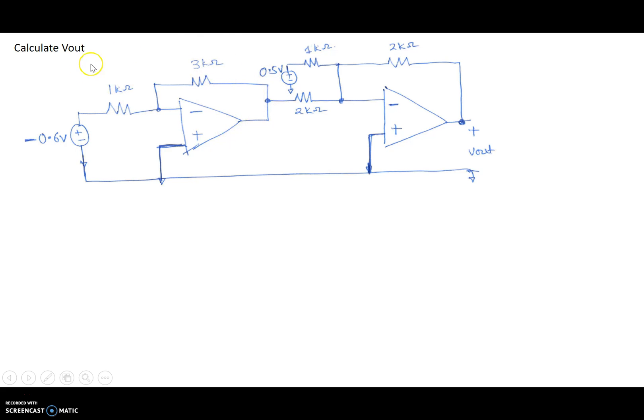So the first op-amp is the inverting amplifier with a gain of 3. So at this node right here, let me label this node as V1. So V1 will actually turn out to be exactly 3 times 0.6 volts, so 1.8 volts.